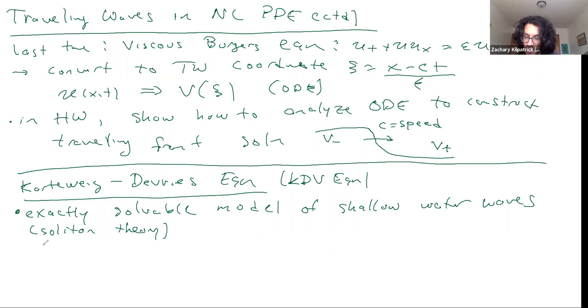What is the KdV equation? It says that the time derivative u_t plus this Burgers type term uu_x plus some additional term u_xxx equals zero. This third order spatial derivative term comes from truncation or approximation to a more complicated equation for shallow water waves.